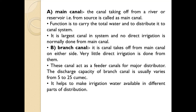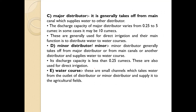Major distributor generally takes off from the main canal and supplies water to other distributors. Its discharge capacity varies from 0.25 to 5 cumecs; in some cases it may be 10 cumecs. It is generally used for direct irrigation and its main function is to distribute water to the water courses. Minor distributor generally takes off from the major distributor, main canal, or another distributor and supplies water to the water course. It has a discharge capacity less than 0.25 cumecs and is also used for direct irrigation.